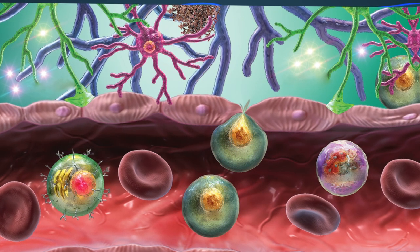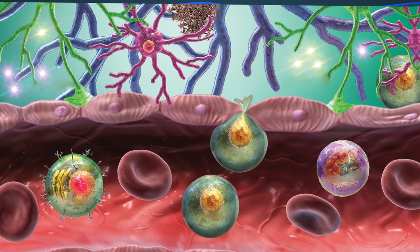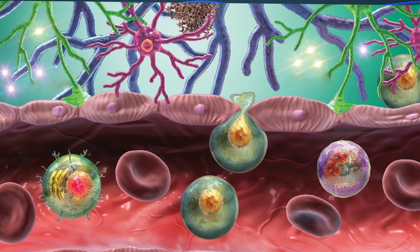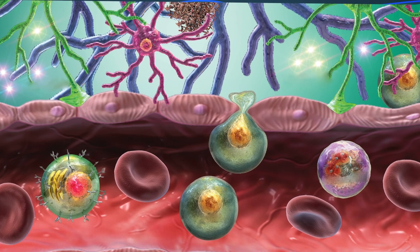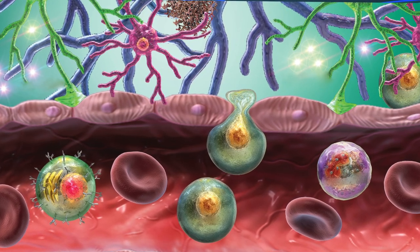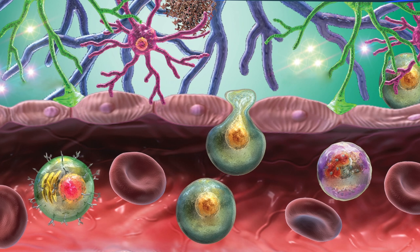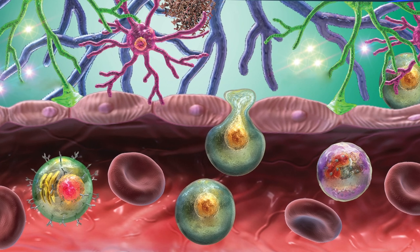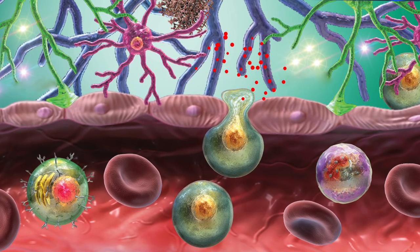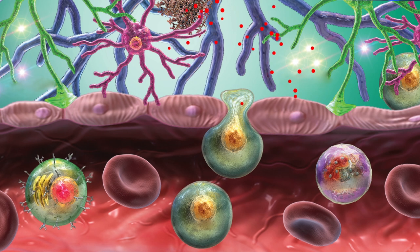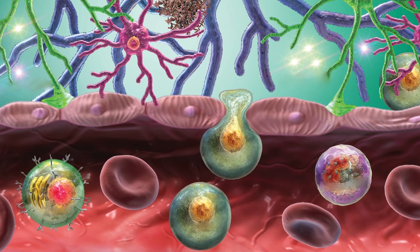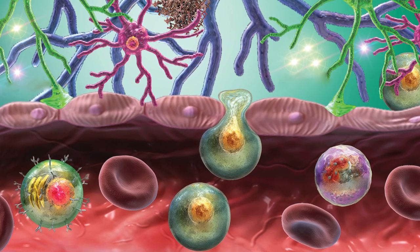Peripheral immune cells including T-lymphocytes play an important role in CNS disorders such as multiple sclerosis. These cells gain entry into the CNS parenchyma when the integrity of the blood-brain barrier is compromised, and participate in regulating the outcome of neural inflammation through the release of a variety of soluble factors such as cytokines.